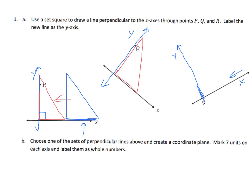Now it says, choose one of the sets of perpendicular lines above and create a coordinate plane. Mark seven units on each axis and label them as whole numbers. So I'll choose the middle one, and I'll just make these tick marks. One, two, three, four, five, six, seven.